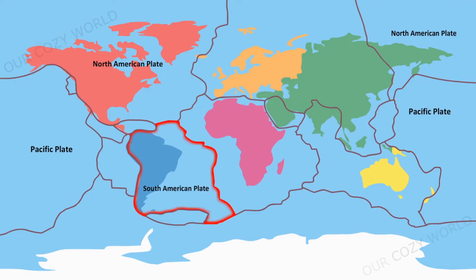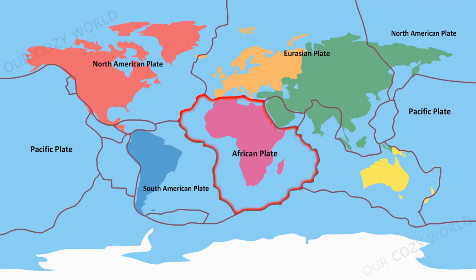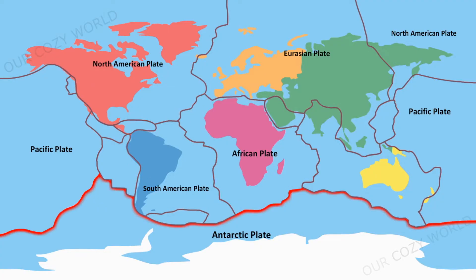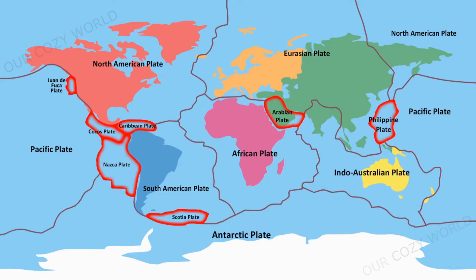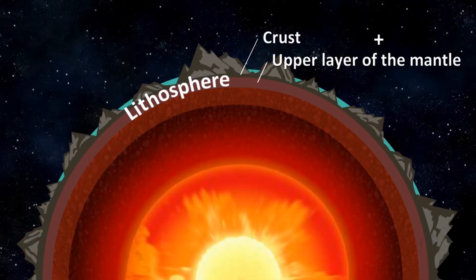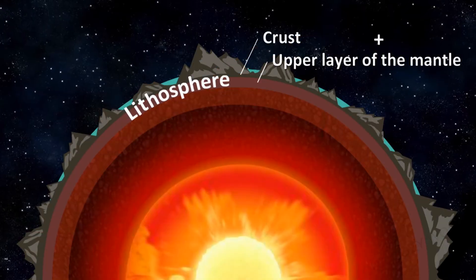There are also numerous smaller minor plates and dozens of micro plates. As you can see, these plates include continents and adjacent parts of the oceans. Beneath the lithosphere is a fluid layer of molten rock called the asthenosphere.